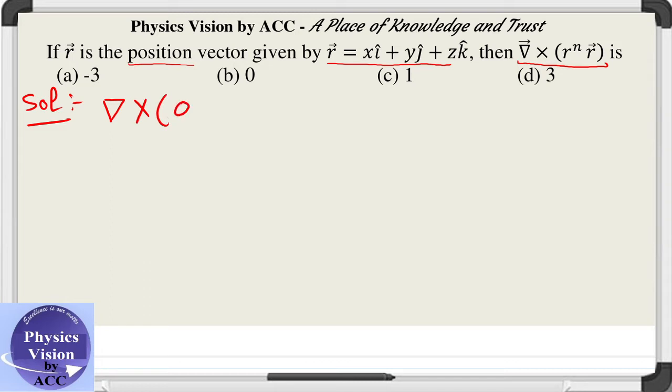First formula is: curl of phi A is given as phi is taken outside the bracket, and curl is taken for that vector, plus then the gradient of phi is taken and the resultant is taken as a cross product with the given vector. This is the formula.